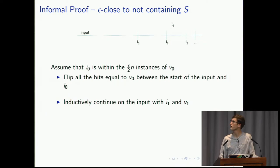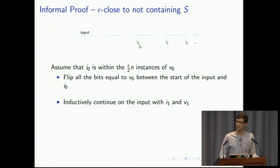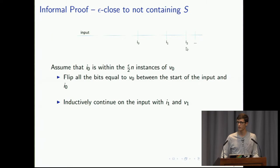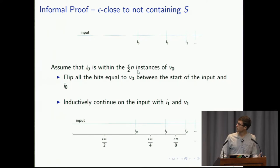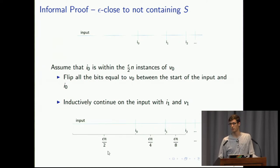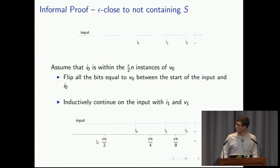We've flipped bits so S cannot be contained in the first partition, the second partition, and inductively each subsequent partition. Since we accepted the input, we failed at some point to find a bit of S, so S is not contained in these index positions, meaning S is not contained in the entirety of the input. Now let's count how many bits we actually flipped. Since we assumed we found v0 within the first epsilon/2 * n many instances of v0, we flipped at most epsilon*n/2 many bits. Because we halved epsilon at every inductive step, we only flipped epsilon*n/4 many bits in the next step. Summing all these up, the sum tends to epsilon*n, so we only flipped epsilon*n many bits in the worst case, and our input is epsilon-close to not containing S.